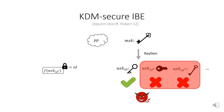The only known result for KDM-secure identity-based encryption from standard assumptions is by Alperin-Sheriff and Peikert. They consider a setting where, in addition to user secret keys, the adversary gets encryptions of messages that are functions of user secret keys, and they build this from LWE. This is an interesting first step, but it fails to capture some applications. In particular, one application of IBE is to get CCA-secure public encryption via the CHK transform, and this notion of KDM security doesn't allow obtaining KDM-CCA-secure encryption.